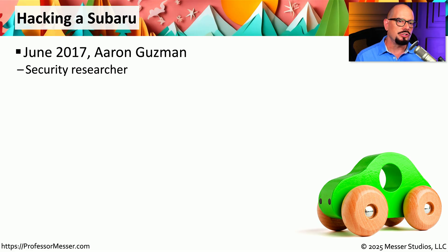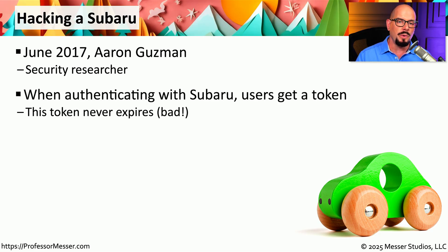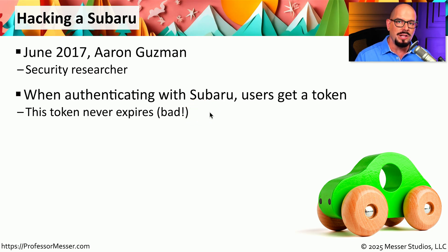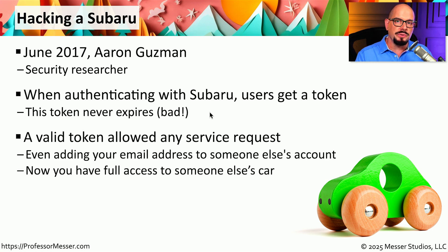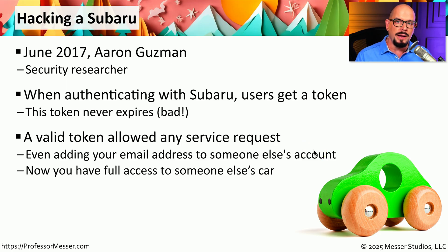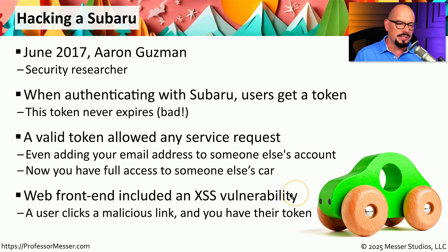One notable cross-site scripting attack was in 2017, where Aaron Guzman found a vulnerability with a Subaru. When you log into the Subaru website, each user gets a login token — however, this token never expires, meaning once logged in on that browser, you are always logged in. If an attacker could obtain any user's session token, they would have indefinite access to that account. This could allow changing profile information such as the account email address, and for modern connected automobiles, even unlocking the car's doors via the web front end. Thankfully, this vulnerability was not exploited and was resolved by the research team.